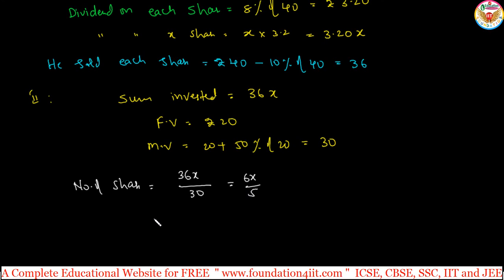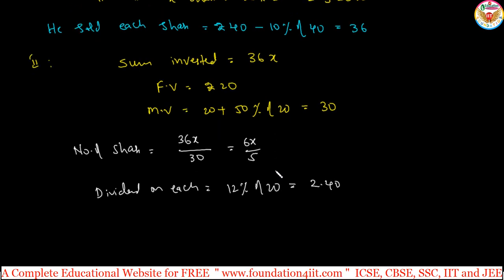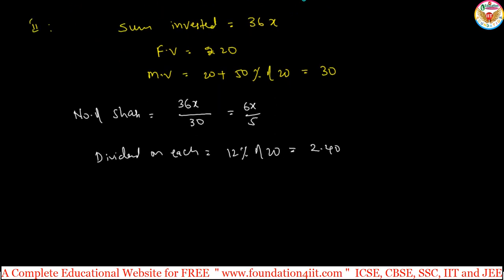And dividend on each share is 12% here. Dividend on each share in this second case, dividend on each, that is 12% of 20. 12% of 20 is 2.40. Total dividend received is 2.40 into total number of shares. You can take this. Total number of shares is 6X by 5. Total dividend received, total dividend is equals to 2.40 into number of shares 6X by 5.